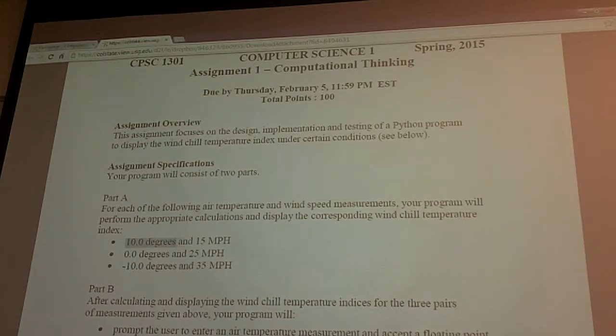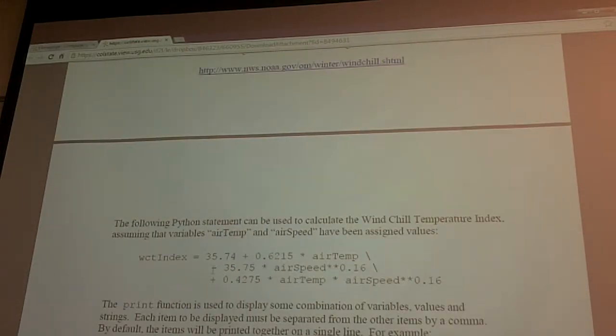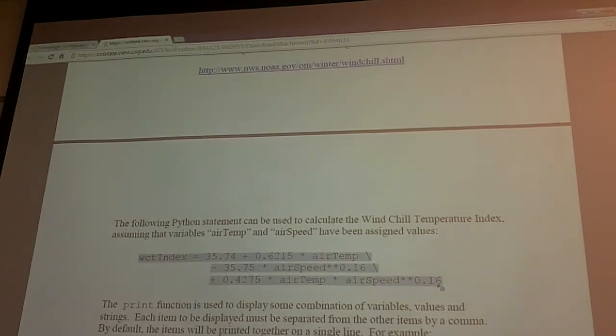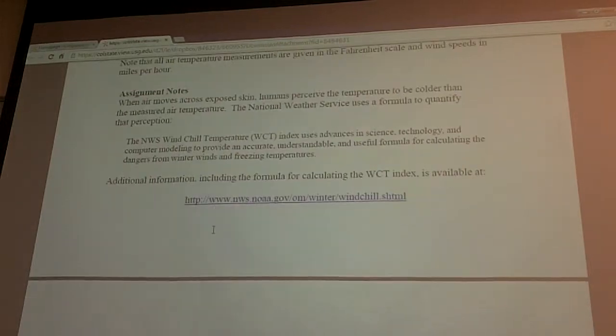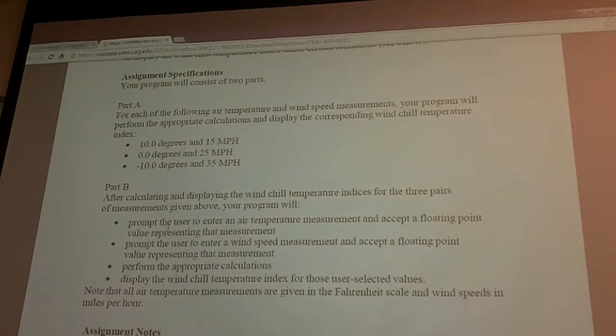So there are two parts in this program, this assignment. First part, you will have three sets of inputs. One, two, three sets of inputs. That is, in each set or in each pair, you have the temperature in degrees and the wind speed in miles per hour. And given these two values, you use this formula to calculate the wind chill temperature index. Okay, and output it. And then in the second part, the temperature and the wind speed will be typed in by the user at runtime when you run the program.